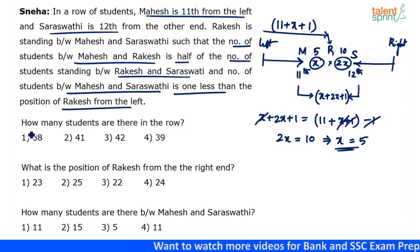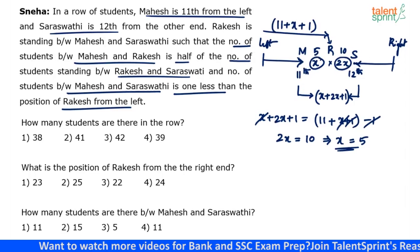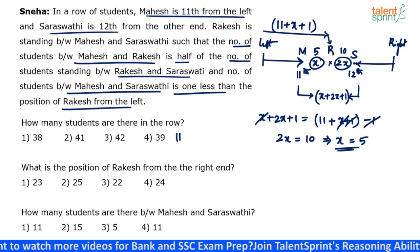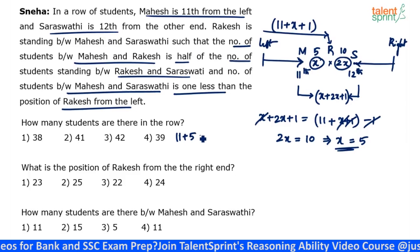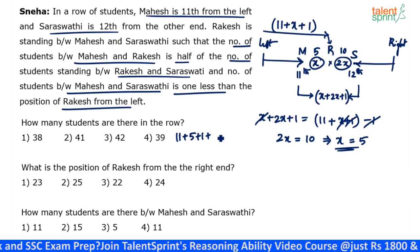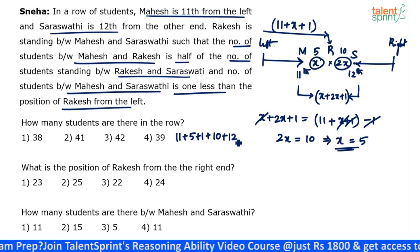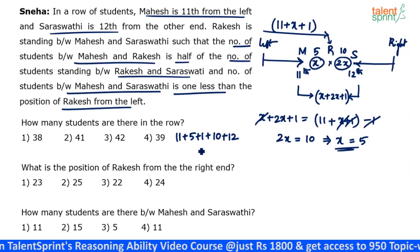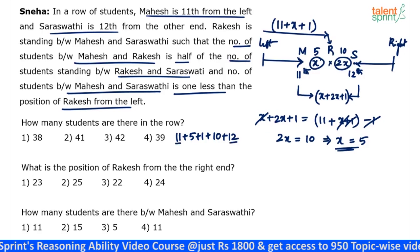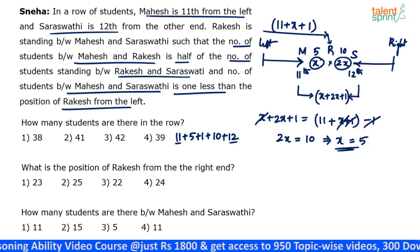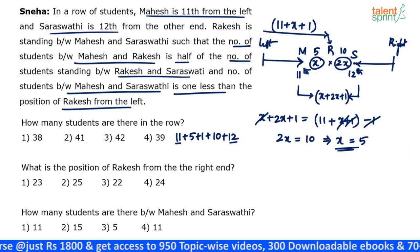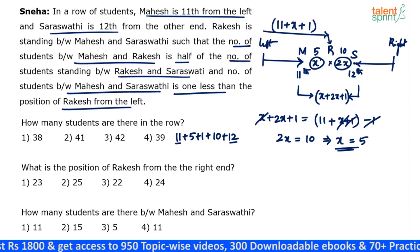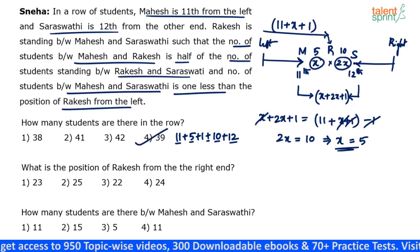Now we can answer the questions. How many students are there in the row? Counting from left to right: 11 up to and including Mahesh, plus 5 persons between Mahesh and Rakesh, plus Rakesh (1 person), plus 10 persons between Rakesh and Saraswati, plus 12 up to and including Saraswati from the right. So 11 plus 5 plus 1 plus 10 plus 12 equals 39. The answer to the first question is 39.